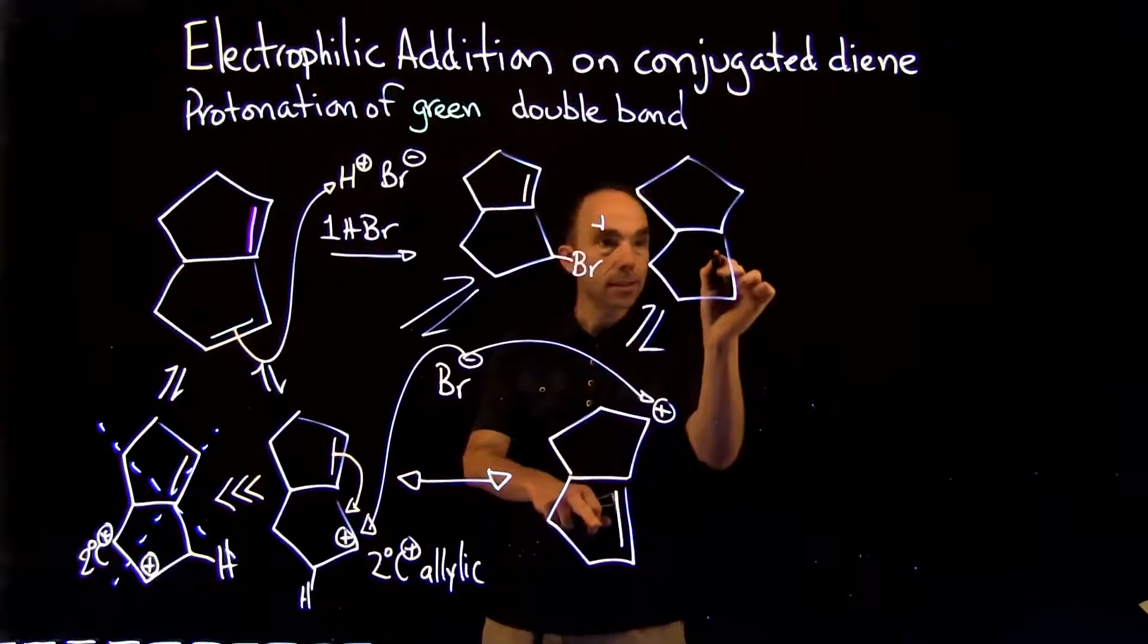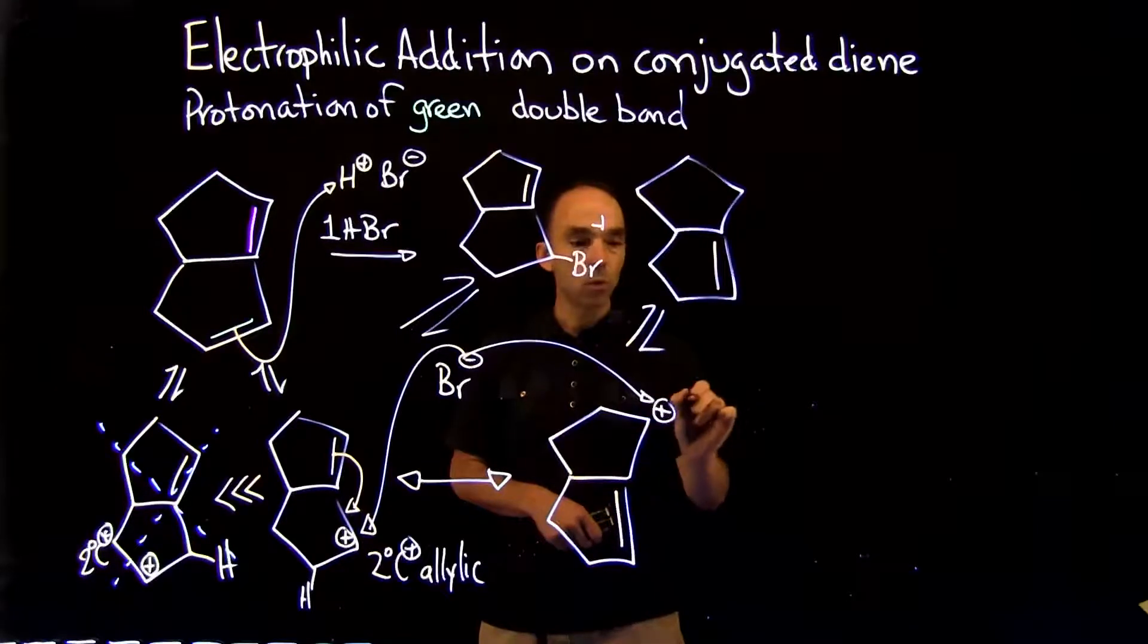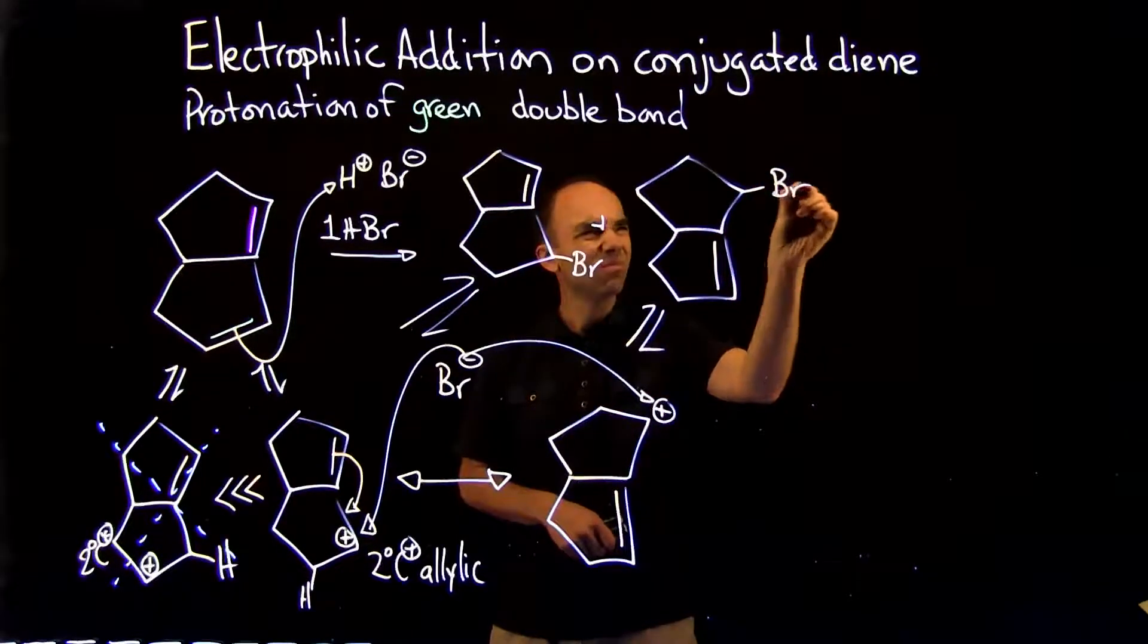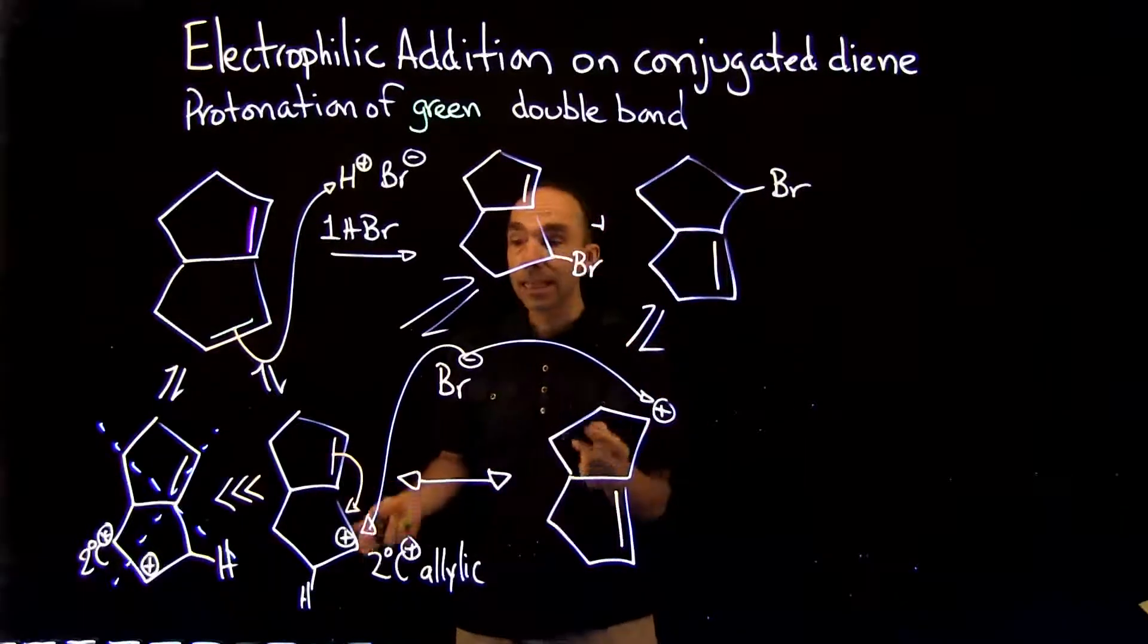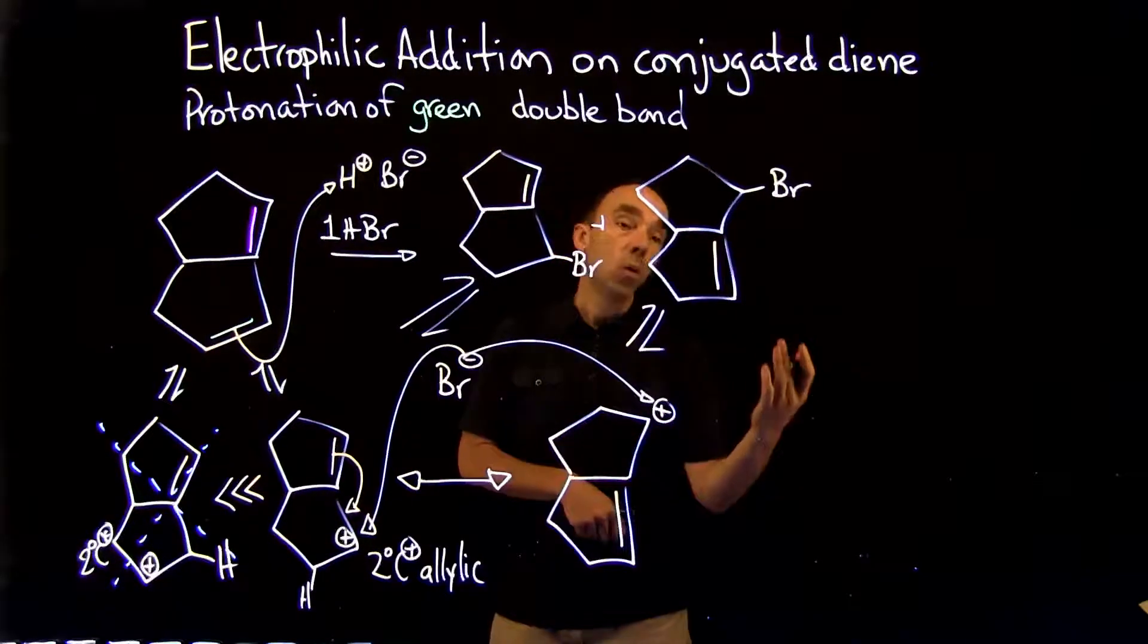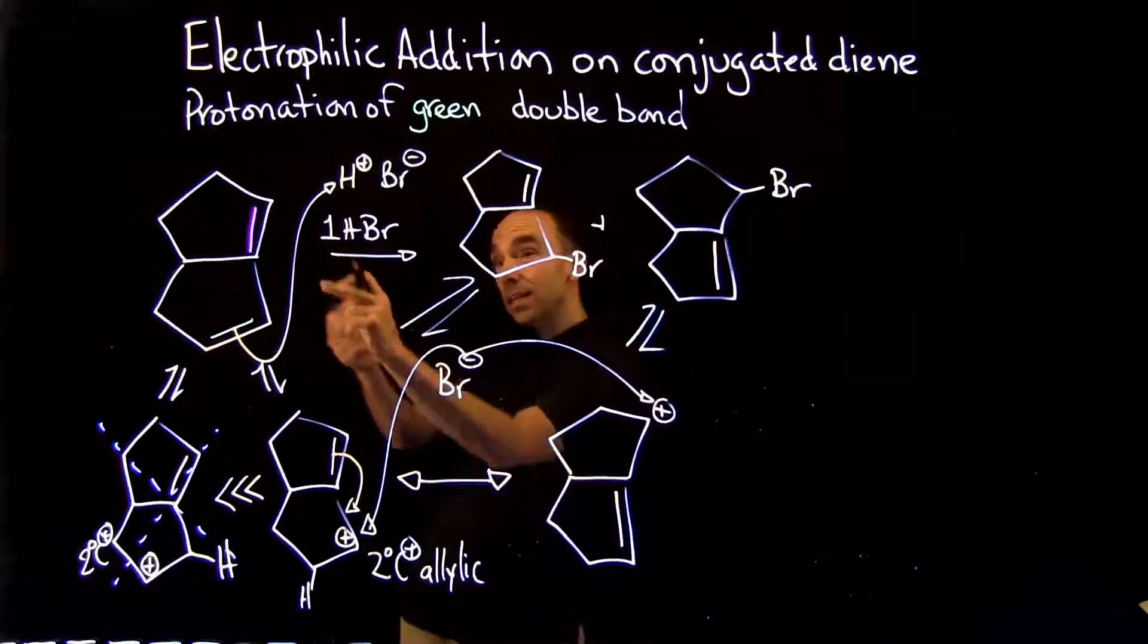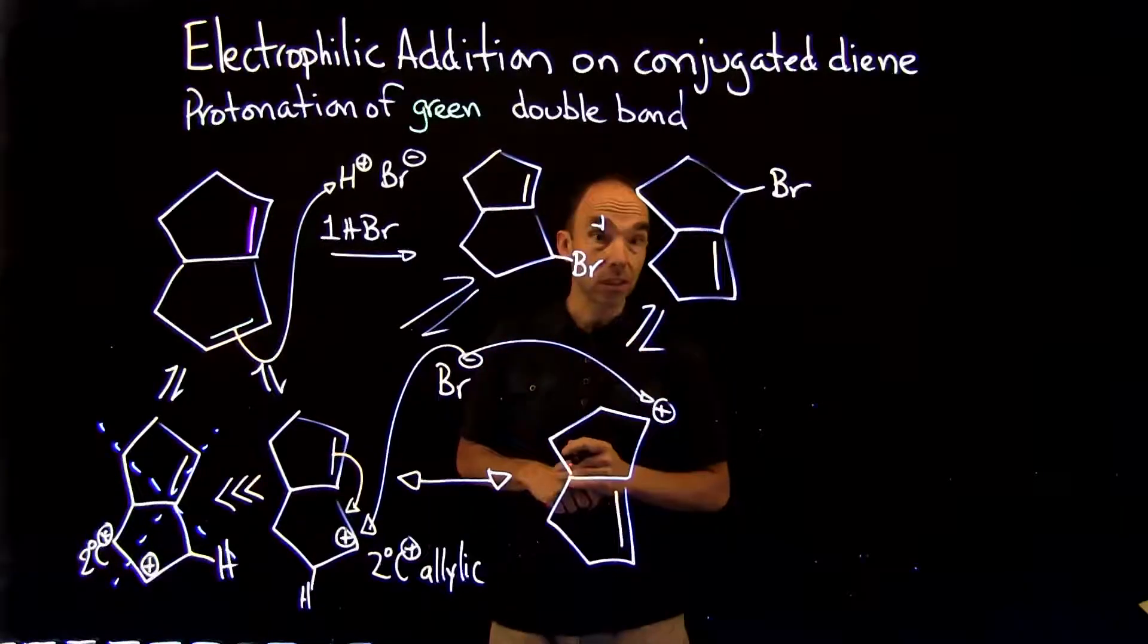In the other case, the double bond stays at the same position, and we have the bromine adding on the carbocation. For the purpose of further discussion, it's important to indicate that the reactions here are reversible. We're going to see that this influences which product is formed. In that particular case, because of the relative positioning of the double bond, the two products are identical.